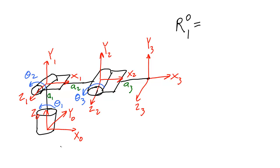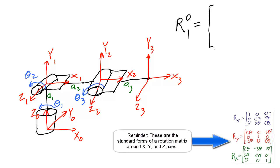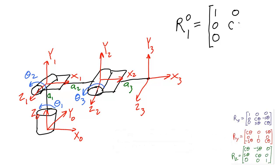I could get frame zero to match frame one by rotating frame zero 90 degrees around the x-zero axis. To write this rotation matrix, I'll go get the standard matrix for a rotation around the x-axis and plug in 90 degrees for theta. I'll use 'c' as shorthand for cosine and 's' as shorthand for sine, so this means the cosine of 90 degrees and this means the sine of 90 degrees.